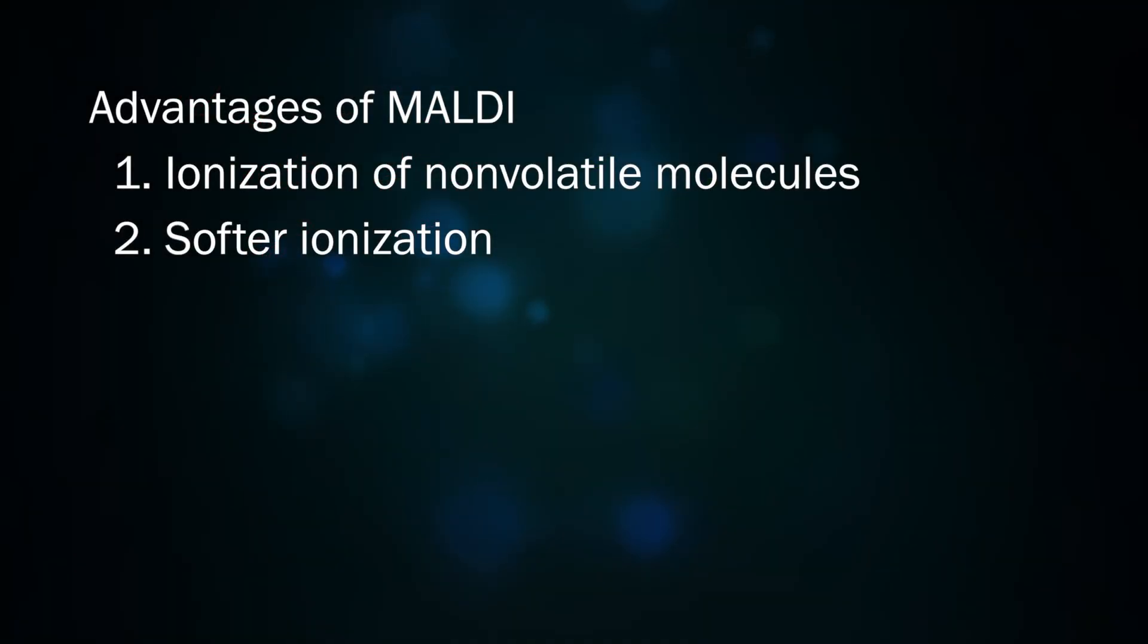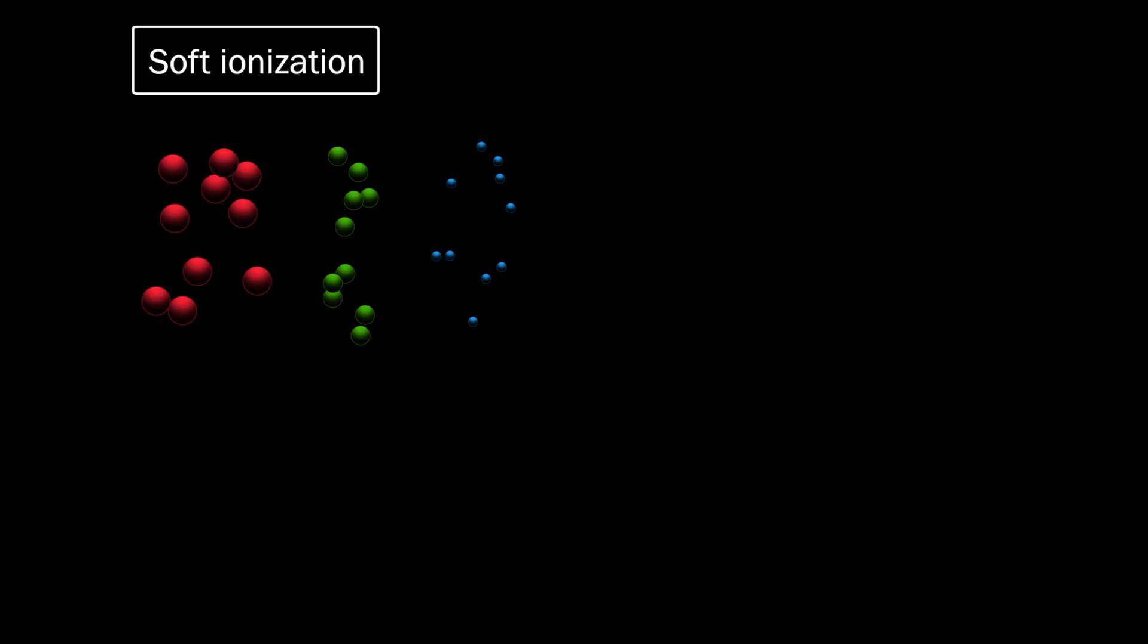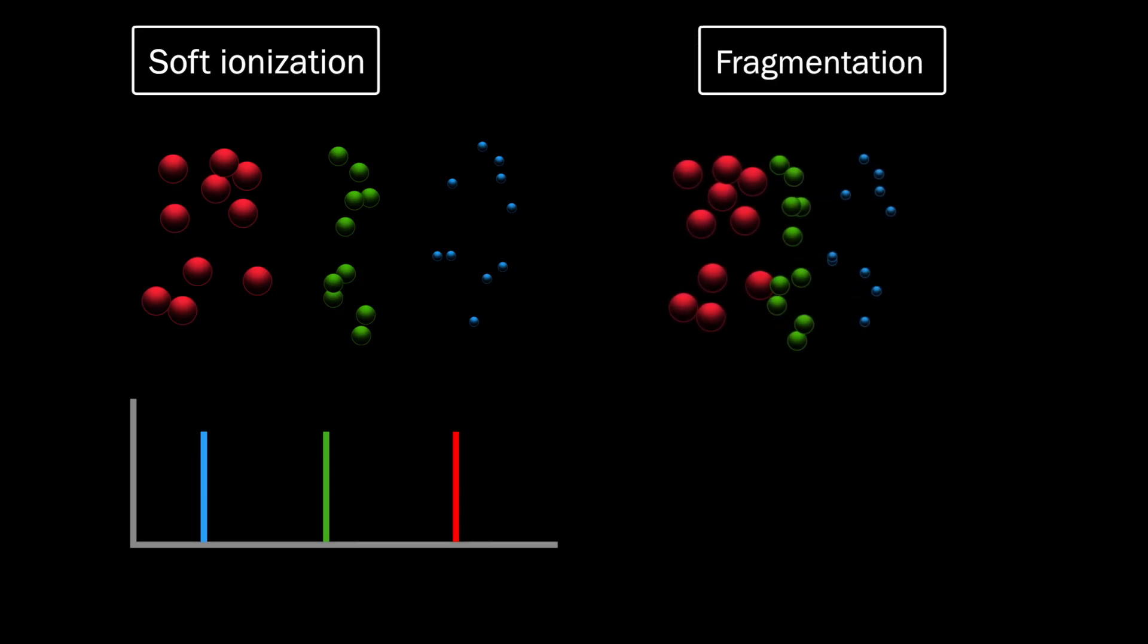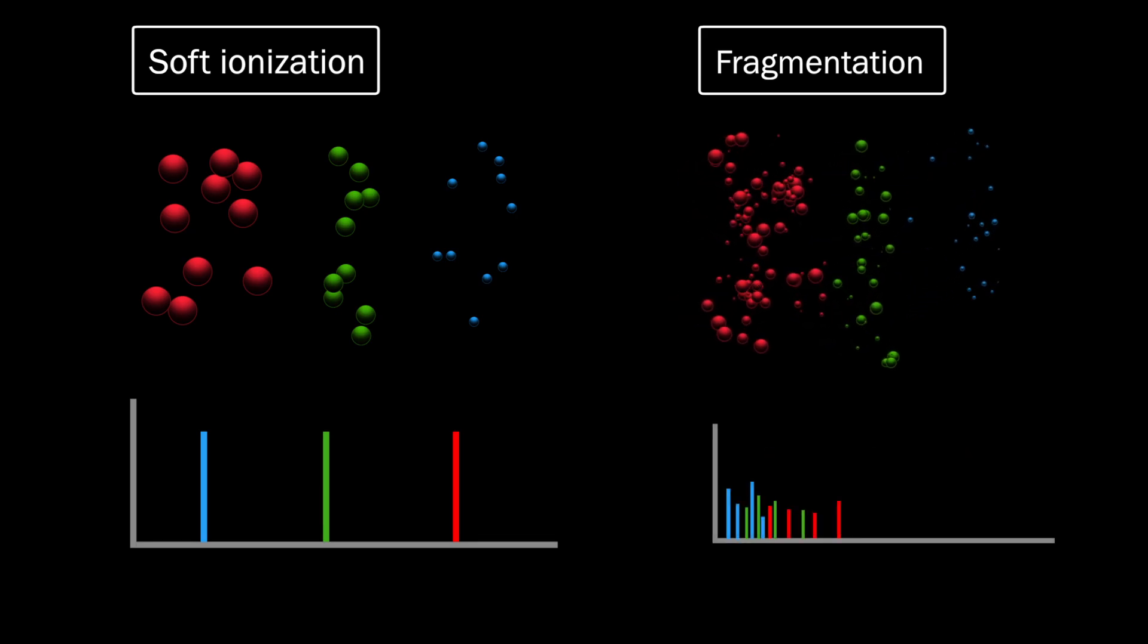This soft ionization makes the direct mass spectrometry of mixed samples possible. When only the molecular ions are observed, the mass spectrum shows the distribution of the different particles in the sample, arranged by their mass-to-charge ratio. For mixed samples with fragmented ions, the overlapping fragment masses would make identification of the individual components very difficult.